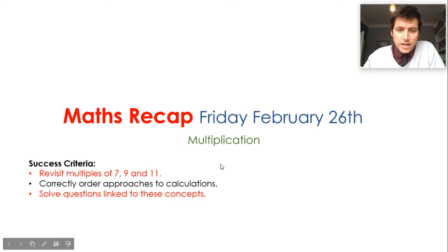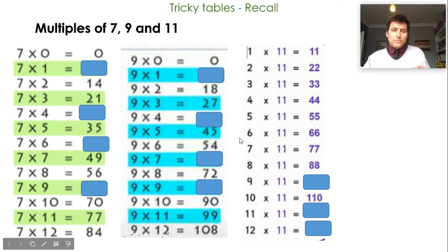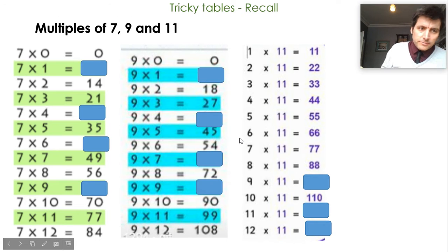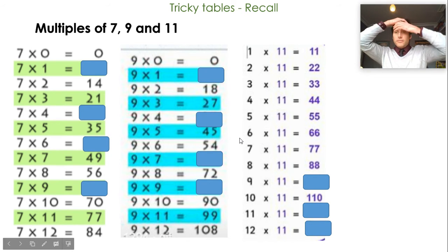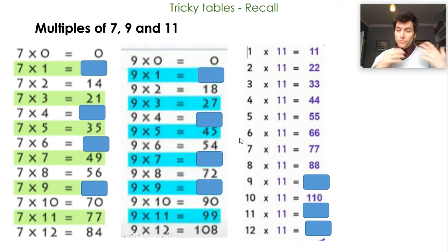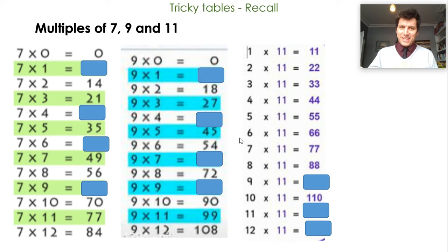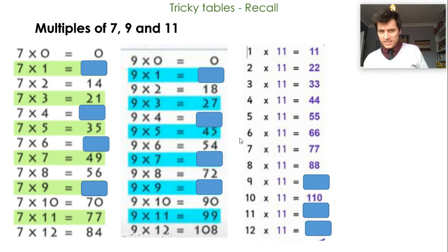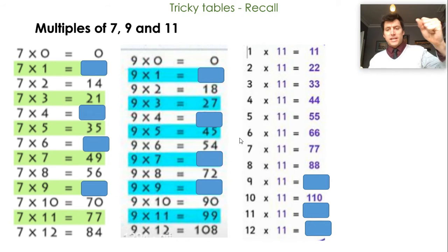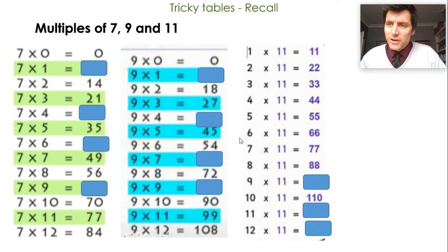So first of all, we've got some missing products from our seven, nine and eleven times tables. Can you very quickly just write down those missing products? Nathan, I'm sure you'll be straight on that. So: seven times one, seven times four, seven times six, seven times nine; nine times one, nine times four, nine times seven, nine times nine, nine times eleven; and eleven times eleven and twelve times eleven.